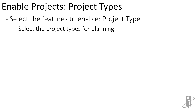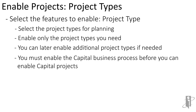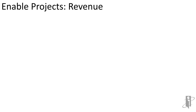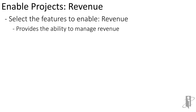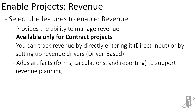To enable the Projects Framework features, you go to console, choose configure, then go to Projects and choose Enable Features. This is where you would turn on the project types that you want to use — capital, indirect, or contract. Only enable the project types you need; you can always add additional project types later. Within each type of project, you can turn on specific features. For revenue, you could turn that on for contract projects, tracking whether you want to directly input it or set up drivers, or turn on specific forms, calculations, or reporting — all done through the Enable Projects Revenue portion.